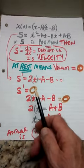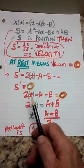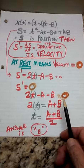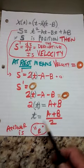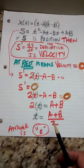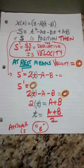Setting that equal to zero I get 2t minus a minus b equals zero. Move the a plus b to the right side, divide by 2. t would equal a plus b over 2. The answer is B.